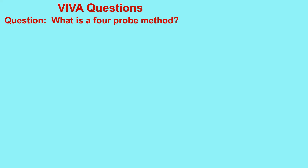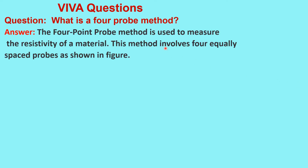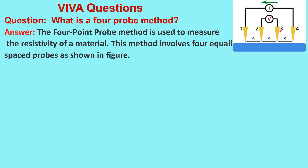What is a four probe method? Four probe method is used to measure the resistivity of a material and this method involves four equally spaced probes — labeled 1, 2, 3, 4 — equally spaced at distance S. The outer probes 1 and 4 are used for sending the current and the inner probes are used for measuring the voltage across the sample.